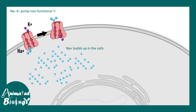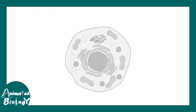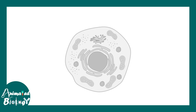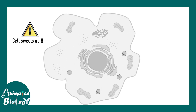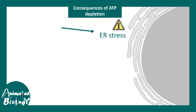When the sodium-potassium ion exchange pump is not working properly, sodium builds up inside the cell. Sodium attracts more water due to changes in osmolarity, and as a result the cell swells up. Cell swelling is not good; it leads to ER stress, or endoplasmic reticulum stress.